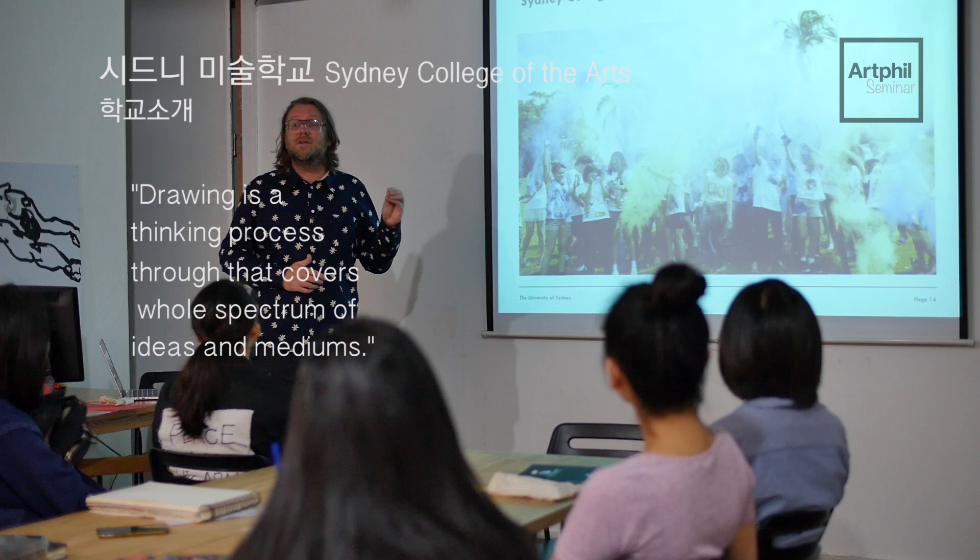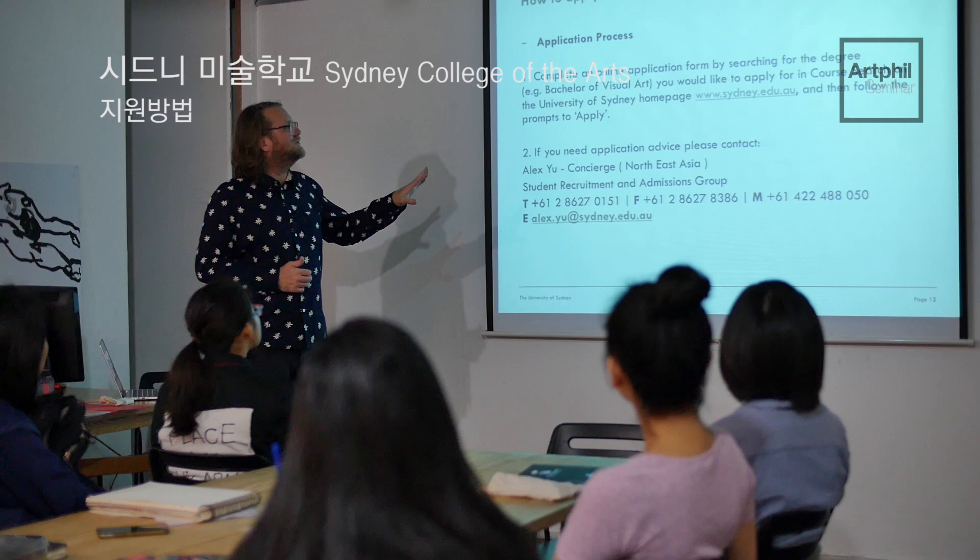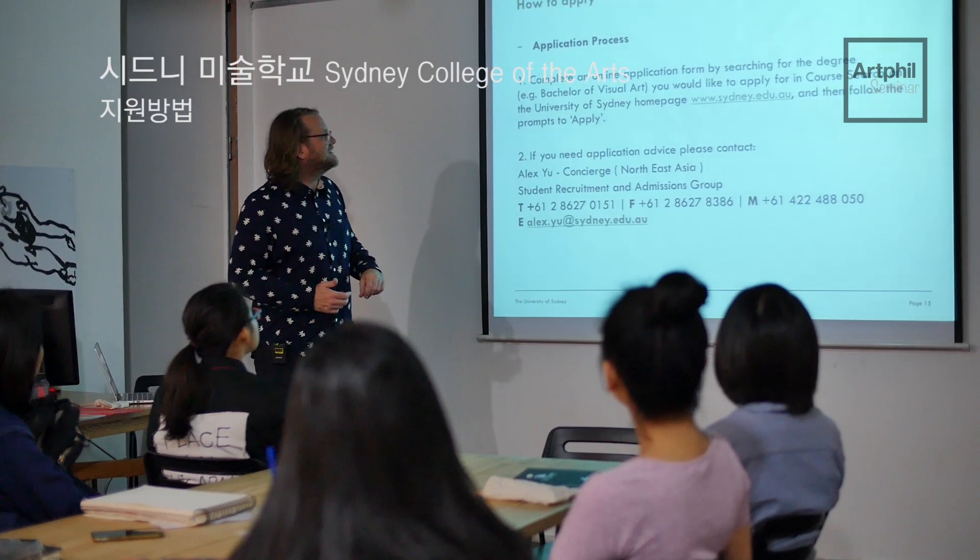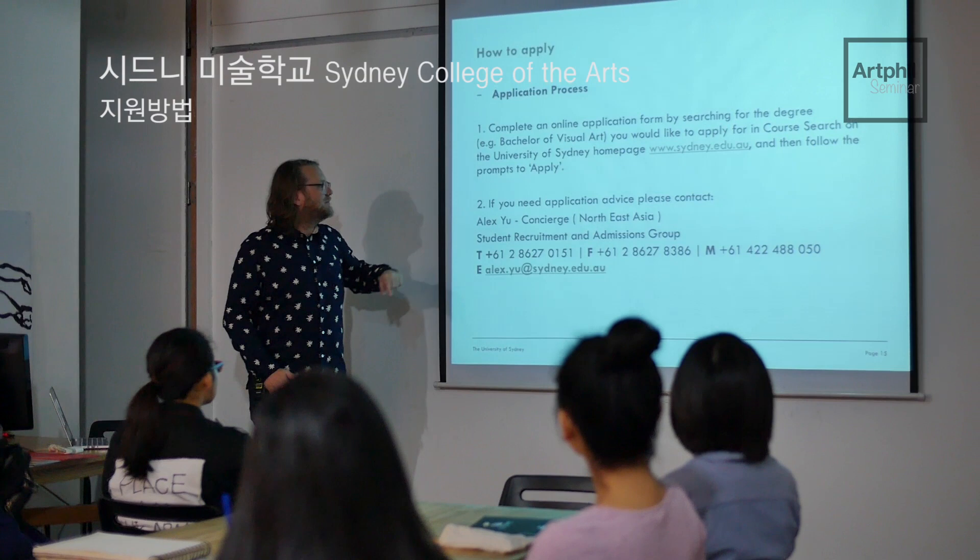If you're interested in applying, you can complete an online application form by searching for the degree — Bachelor of Visual Arts at Sydney University. There's the homepage address. If you need any help with your application, please speak to Alex Yu in the student recruitment section.